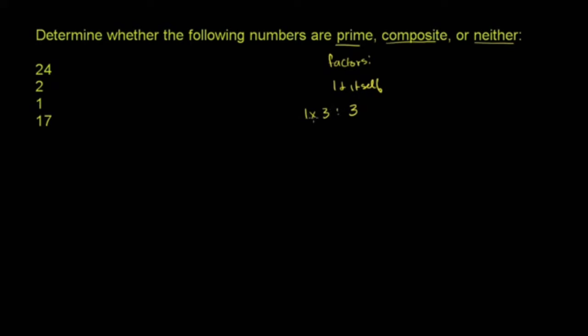A composite number is a natural number that has more than just 1 and itself as factors. We'll see examples of that and an interesting case of neither in this problem.